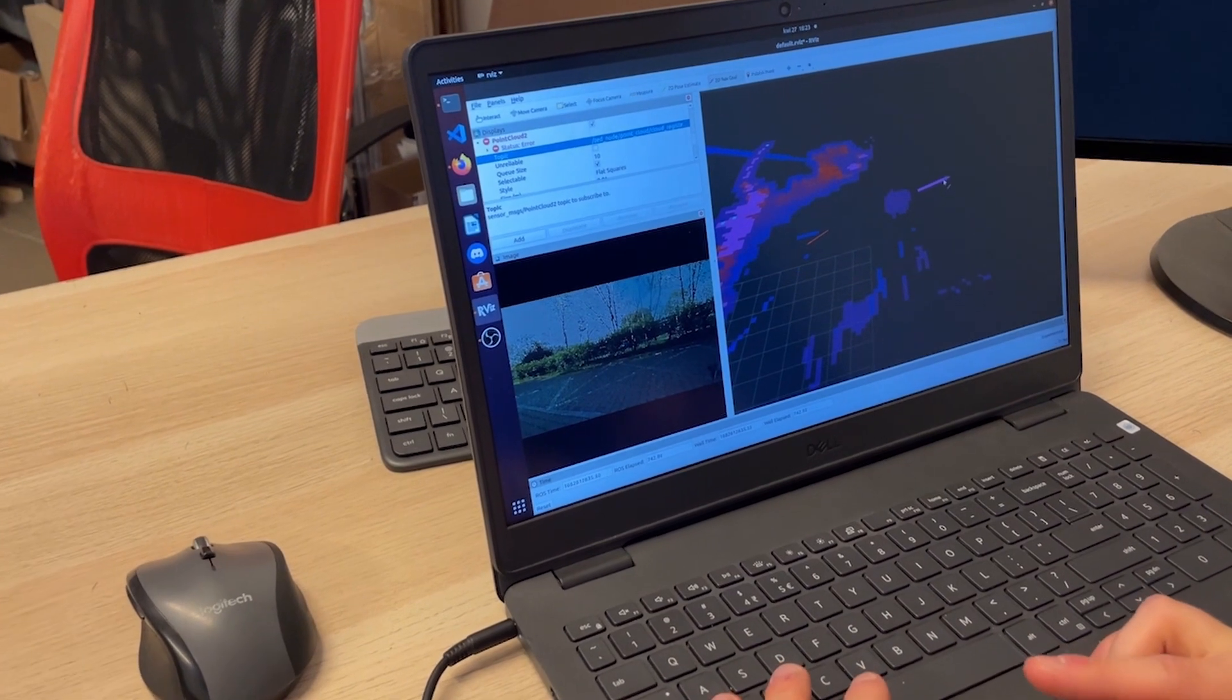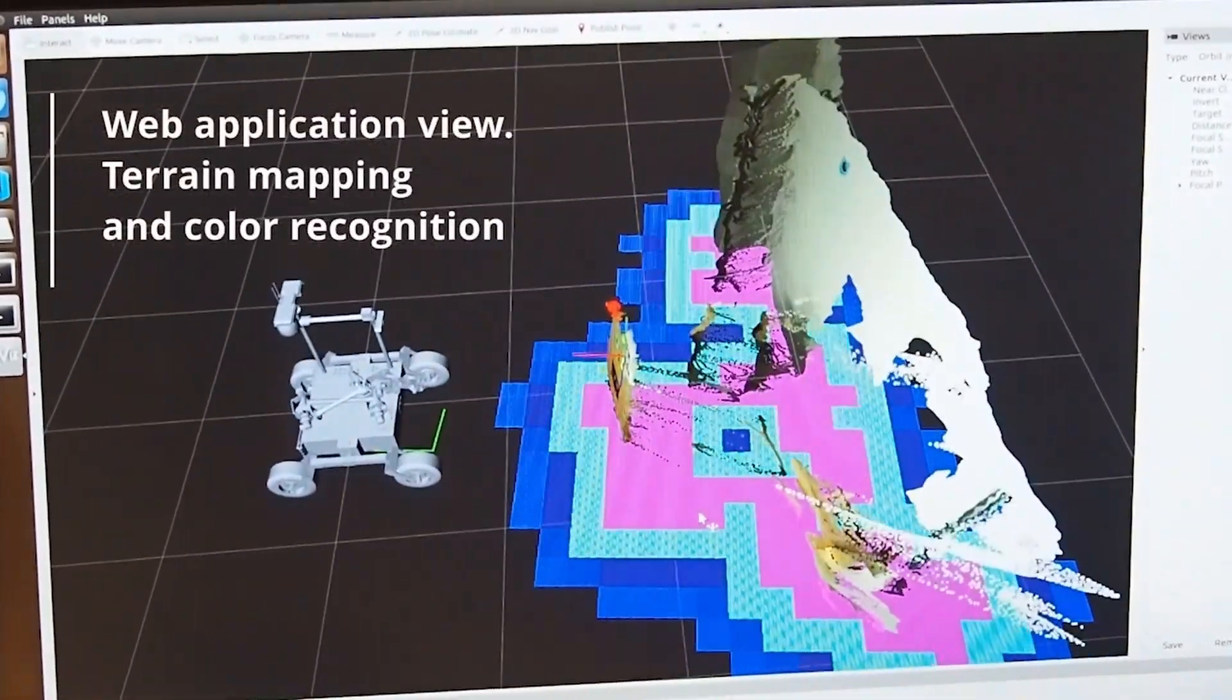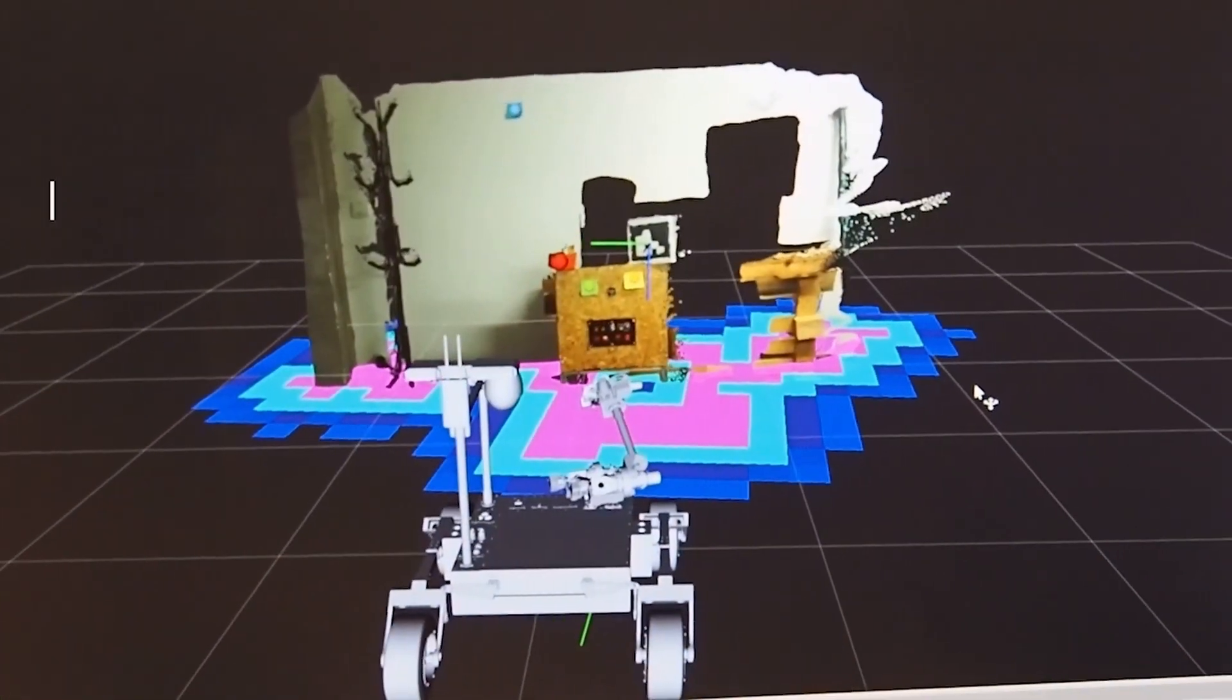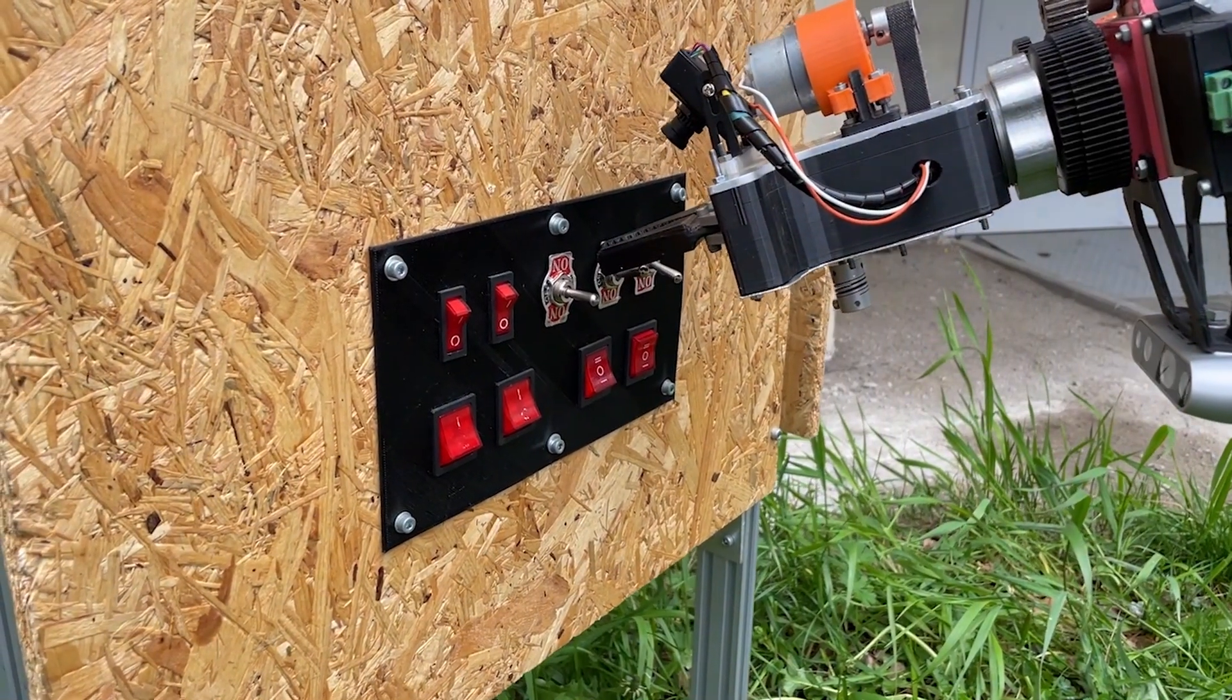To control the rover operators use our custom-made web application. It enables us to control every module of the rover, monitor system status, display cameras, and other data gathered by the rover.